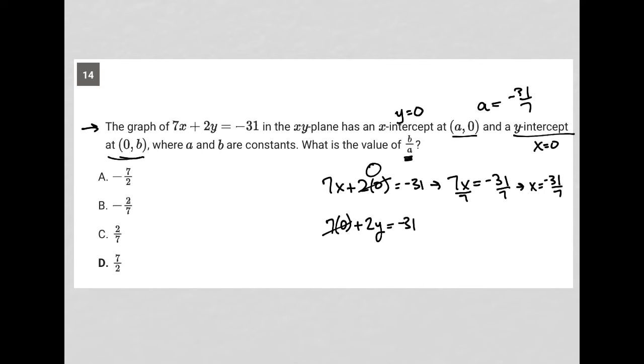Of course, this whole thing becomes zero, which means I really just have 2y equals negative 31 divided by 2. And I'm left with y equals negative 31 over 2.